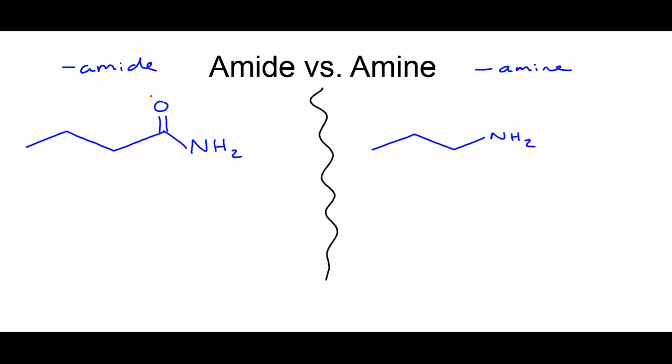Looking at naming: a four-carbon chain with an amine functional group is butanamine. A three-carbon chain with an amine is propanamine. Remember that nitrogen can bond three times, so it won't always have hydrogens — it may have other atoms bonding onto it.